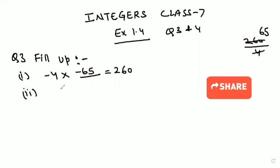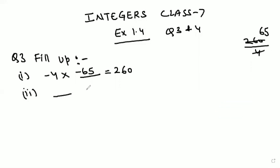Second part: what should be multiplied by 12 so as to get minus 3132? Here, minus 3132 will be divided by 12 to get minus 261. So minus 261 is our answer.